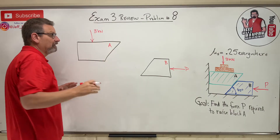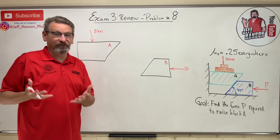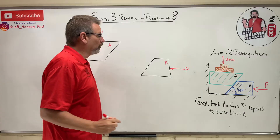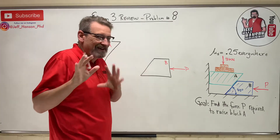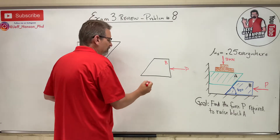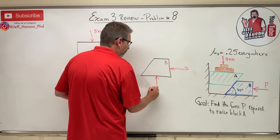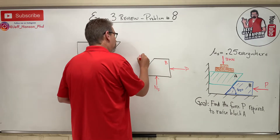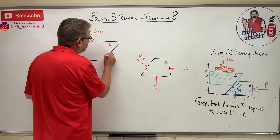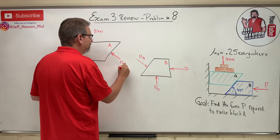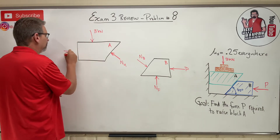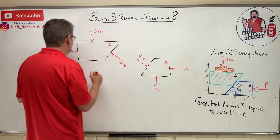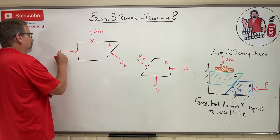Next, put on all the normal forces. Anytime two bodies are in contact, that's perfectly normal - put on all the normal forces. It doesn't matter what you call them as long as they're different from each other. I'll call this N_floor, this one N_B, and this one N_A. That same normal appears on both bodies at the contact surface.